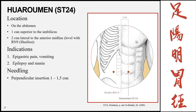Huaroumen, Stomach 24, is on the abdomen, 1 cun superior to the umbilicus and 2 cun lateral to the midline. Indications include epigastric pain, vomiting, epilepsy, and mania. Insertion is perpendicular, 1 to 1.5 cun.